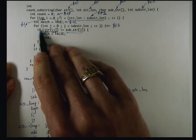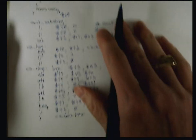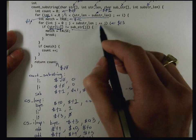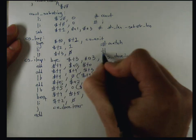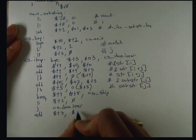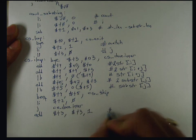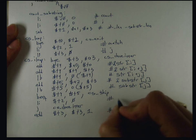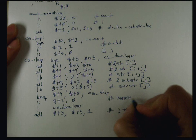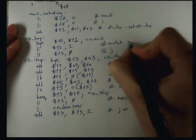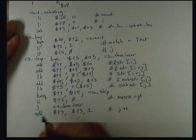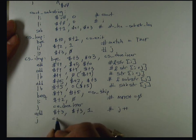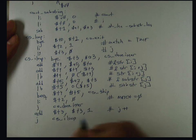That handles the body of the if statement. Now I have to handle the case where we skipped over the body of the if statement, and I'm done with the loop except for incrementing J. I'm going to do that increment of J with an add, and J is in T3, so T3 plus one written back into T3. Then I have to check to see if I need to do another iteration of the loop, so I'll go back and do an unconditional jump to CSI loop.